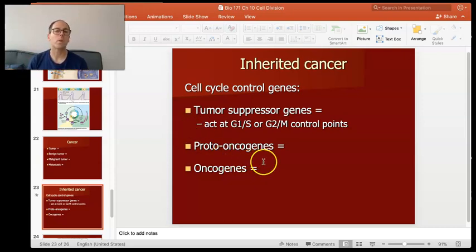Then you have these other genes called proto-oncogenes. Now, proto means to come before. Onco means cancer. Proto-oncogenes are not cancer genes. What they do is they're like the accelerator pedal for cell division. So you turn those genes on. That activates cell division. So tumor suppressor genes are like the brake. Proto-oncogenes are like the gas.